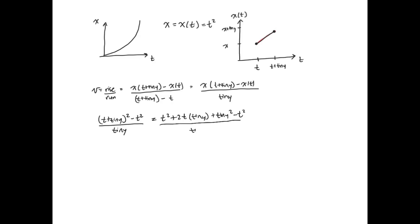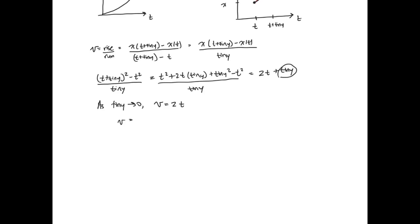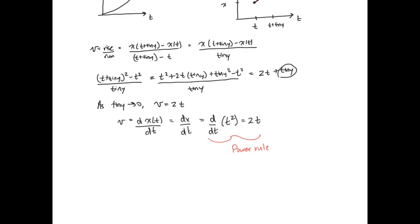This equals 2t + tiny. The whole point of derivatives is to see what happens when this tiny approaches zero. As tiny approaches zero, the velocity equals 2t. So the velocity — which is the derivative of x with respect to time, dx/dt — equals d/dt of t², which equals 2t. You should recognize this as the power rule in derivatives. I'm going to quickly write out the derivative techniques we'll be using in this course.